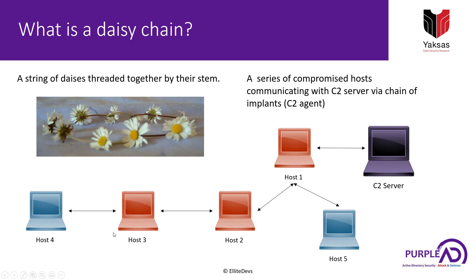If all five hosts communicate directly with our C2 server, this has certain disadvantages which I will talk about later. Another way of doing this is that once we compromise a target host, we can establish a server on it and let other command and control agents talk to this host, which in turn relays all the traffic to our command and control server.